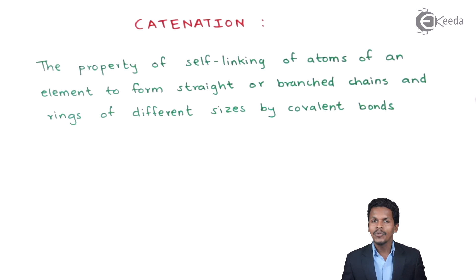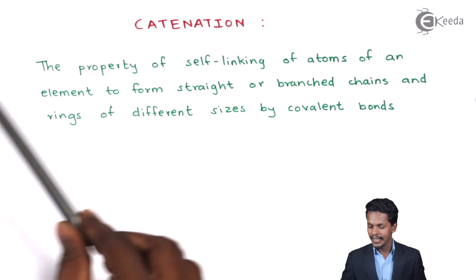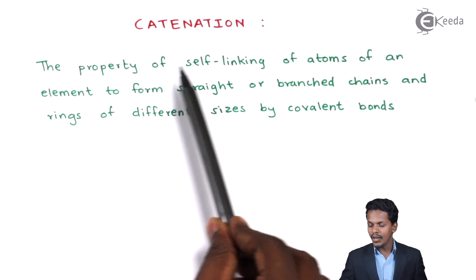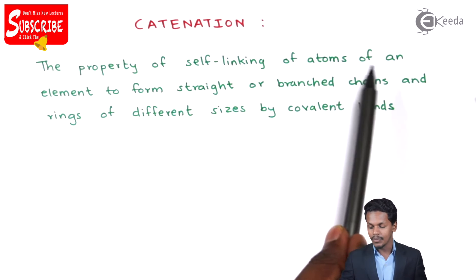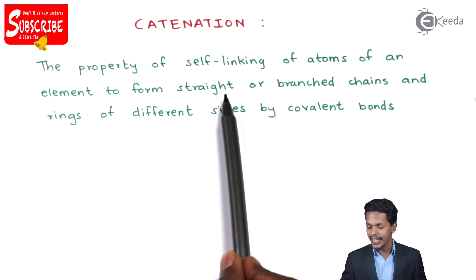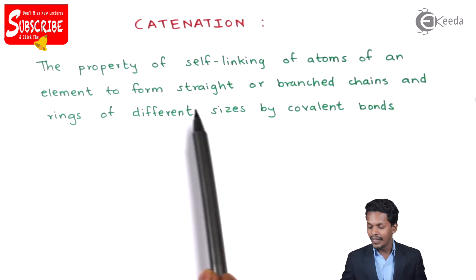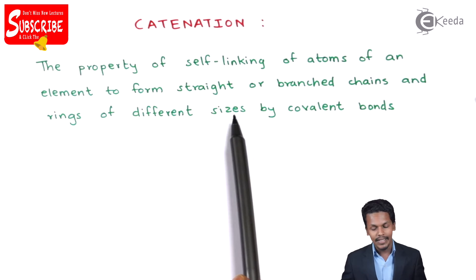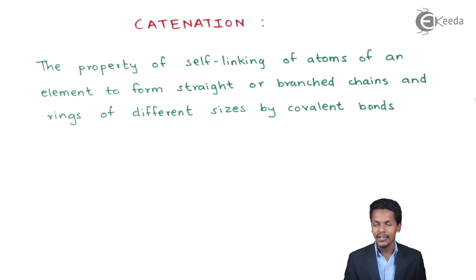So here I am going to talk about catenation. Let us understand the definition of catenation first. The property of self-linking of the atoms of an element to form straight, branched, or ring structures of different sizes by covalent bonds is known as catenation.